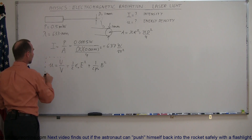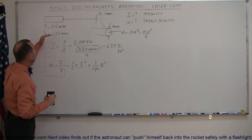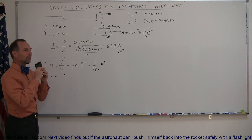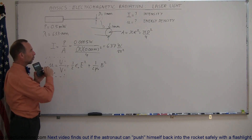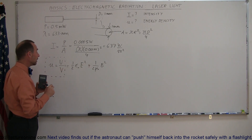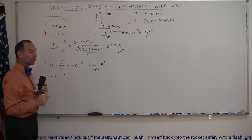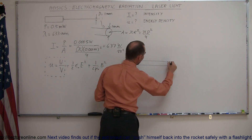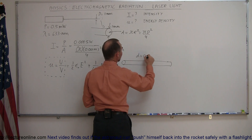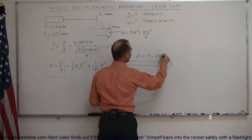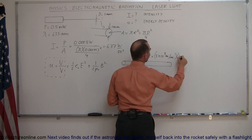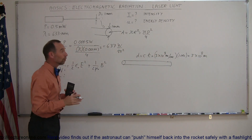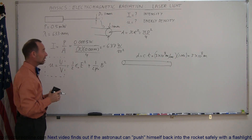There are two ways to find the energy density. First, if the energy output of the laser is 0.5 milliwatts, we can imagine a beam that's gone out for one second — we then know the length of the beam, the volume of the beam, and how much energy it contains. After one second, the distance equals the speed of light times time: 3×10⁸ meters per second times 1 second, which is 3×10⁸ meters — that's the length of the beam.